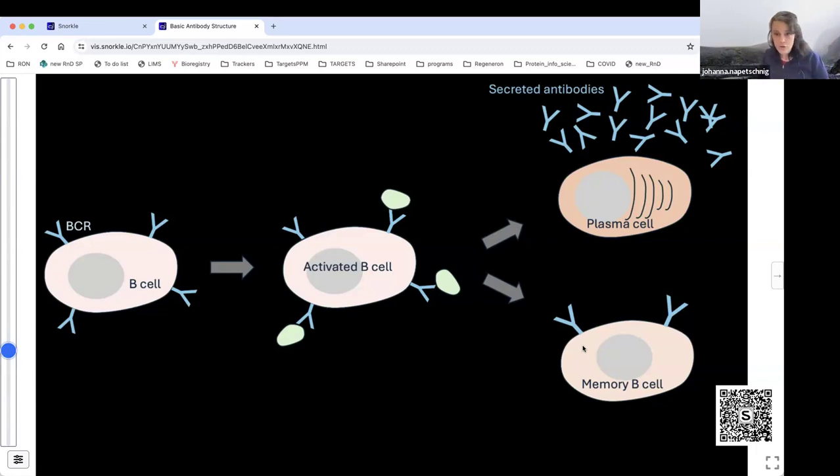These B cells also can differentiate into something that we call memory B cells. And these memory B cells are basically a record of what your body has seen. So at any given point of time, your body has lots of different memory B cells floating around in your body. For each of them, there are only a few, so they are not that many, but they basically patrol your body. And in case they see an invader again, and you might have seen this invader previously, they can switch and induce an immune response and the production of antibodies really quickly. And that's kind of like we call this a secondary response. And these antibodies are very powerful weapons.